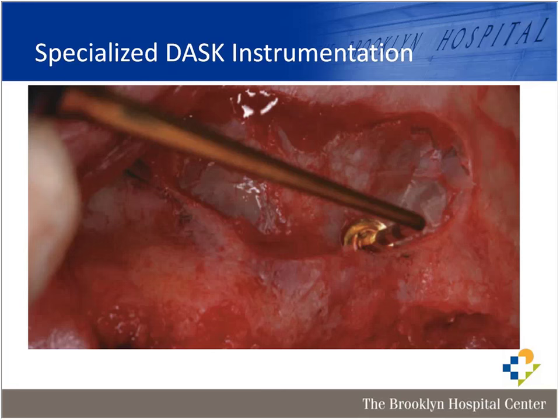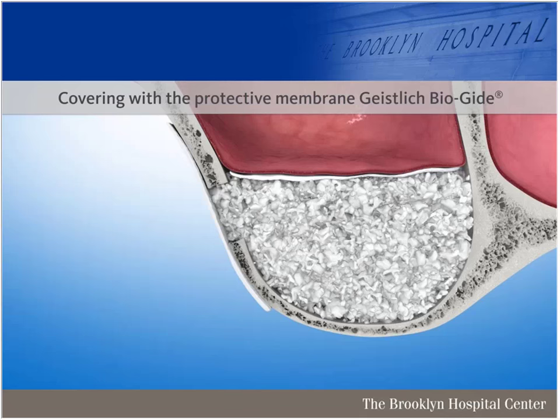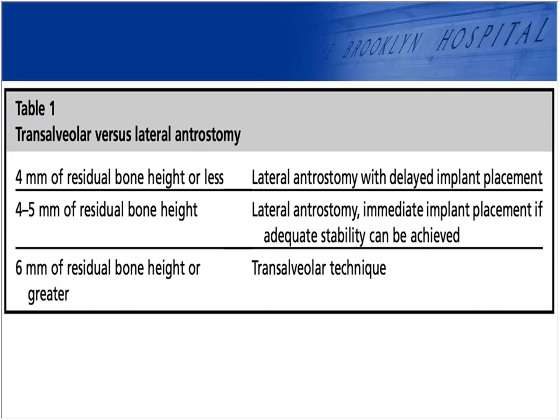Once you've made your lateral window, you fill it with bone. You can see the sinus filled with bone and a membrane acting as a barrier between the sinus membrane and the bone placed within the sinus. I do use biological membranes because even though you may not see a tear, there may be microscopic small tears — it's an added belt-and-suspenders to separate your graft from the sinus cavity, helping decrease potential infection.